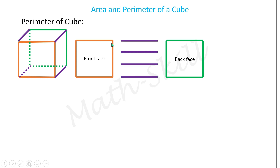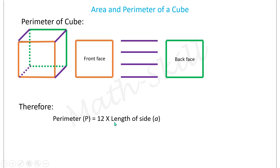On counting the total number of edges: the front face has four edges, the back face has four edges, and the connecting edges are four, which means there are 12 edges for the cube. Therefore, the perimeter of a cube is equal to 12 times the length of each side. Since all sides are of equal length a, the perimeter is equal to 12a. Perimeter is measured in units.